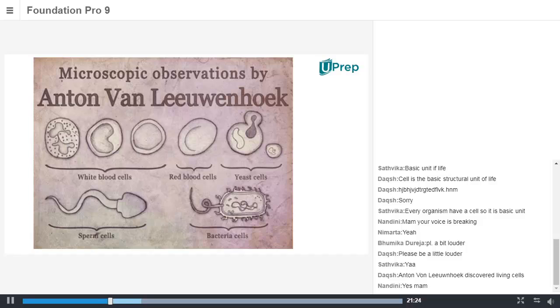He had observed different living cells by staining them. Staining is the process of coloring the particular subject so that they can be clearly visible under microscope. So now we are getting into the next point regarding cell.